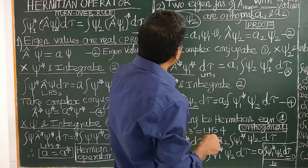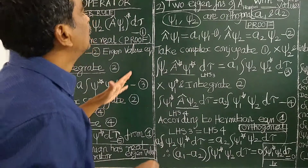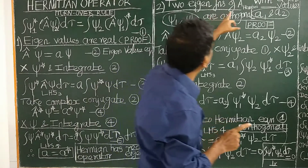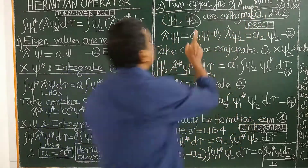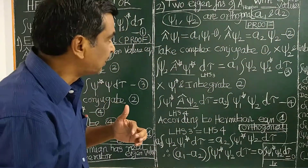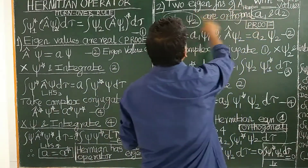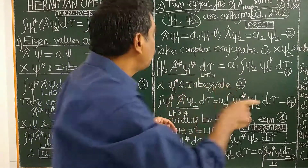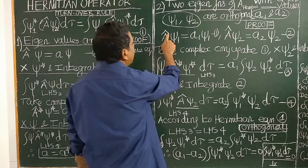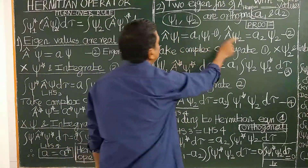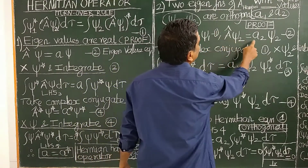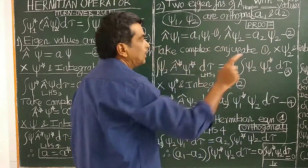Let us see the second important property and prove it. Consider two eigenfunctions psi-1 and psi-2 of a Hermitian operator with different eigenvalues a1 and a2. Since the eigenfunctions are different, the eigenvalues are different: a1 and a2. These two eigenfunctions are orthogonal. Let us prove this. We write the eigenvalue equations: A-cap psi-1 equals a1 psi-1 (equation 1), and A-cap psi-2 equals a2 psi-2.